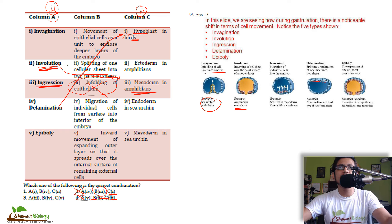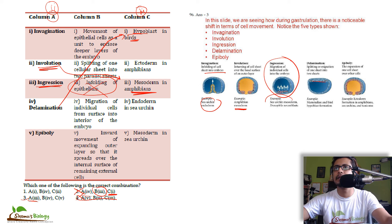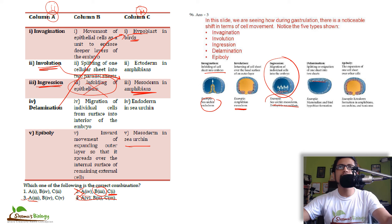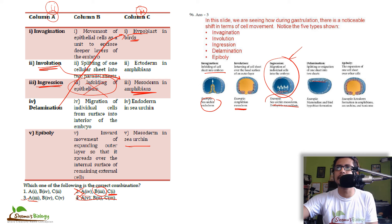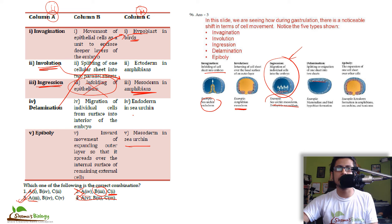Ingression is the migration of individual cells into the interior of the embryo — as in sea urchin mesoderm and Drosophila neuroblasts. Looking at option 3: A=3 (ingression), B=4 (migration of individual cells from surface to interior), and C=5 (mesoderm in sea urchin) — all are correct. Option 3 is the correct answer for this gastrulation matching question.